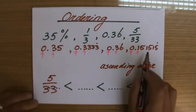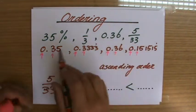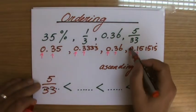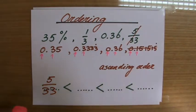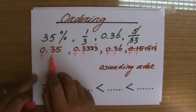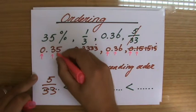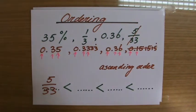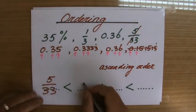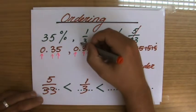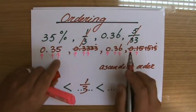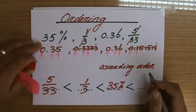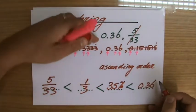The decimals are just for our own reference. We write down 5 over 33 on the number line, put a thin line through it so we know we've placed it. The remaining three all have 3 in the tenths place, so we go to the next place value: a 5, a 3, and a 6. The smallest is 3, so 1 over 3 comes next, then 35 percent, and finally 0.36 as the largest.